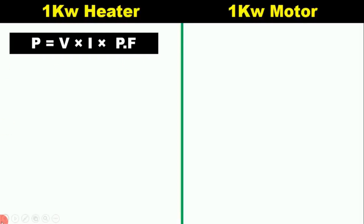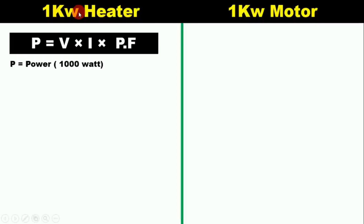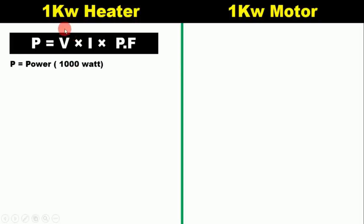Here we have a heater of 1 kilowatt, which means power will be 1000 watts. We are first doing the calculation for single phase; later we will do the calculation for 3 phase as well. This formula is for single phase. So this 1 kilowatt heater is working on single phase, whose power is 1000 watts. Voltage for single phase is 230 volts.